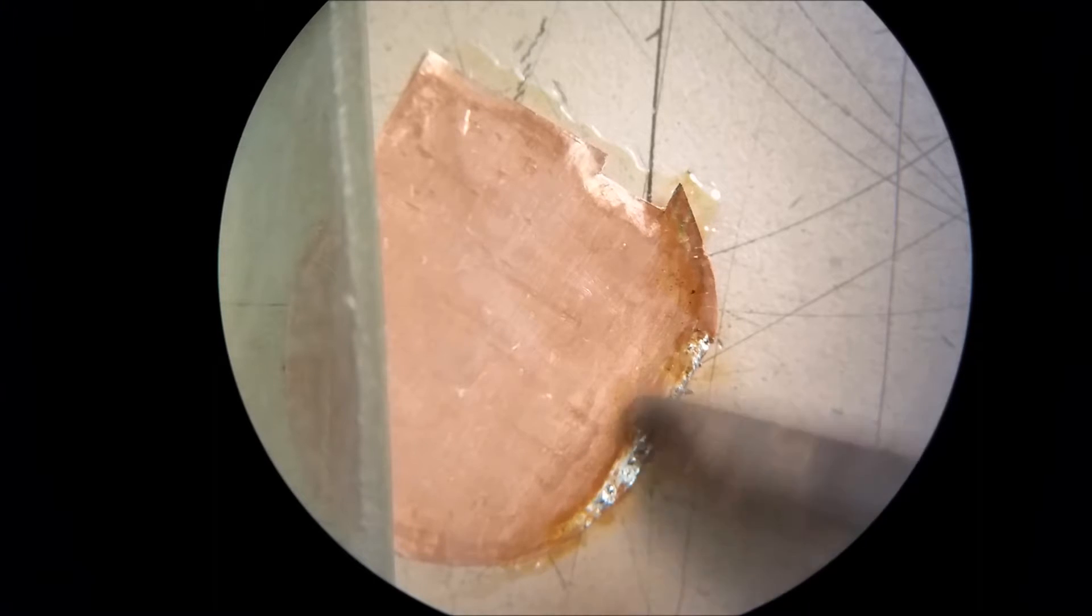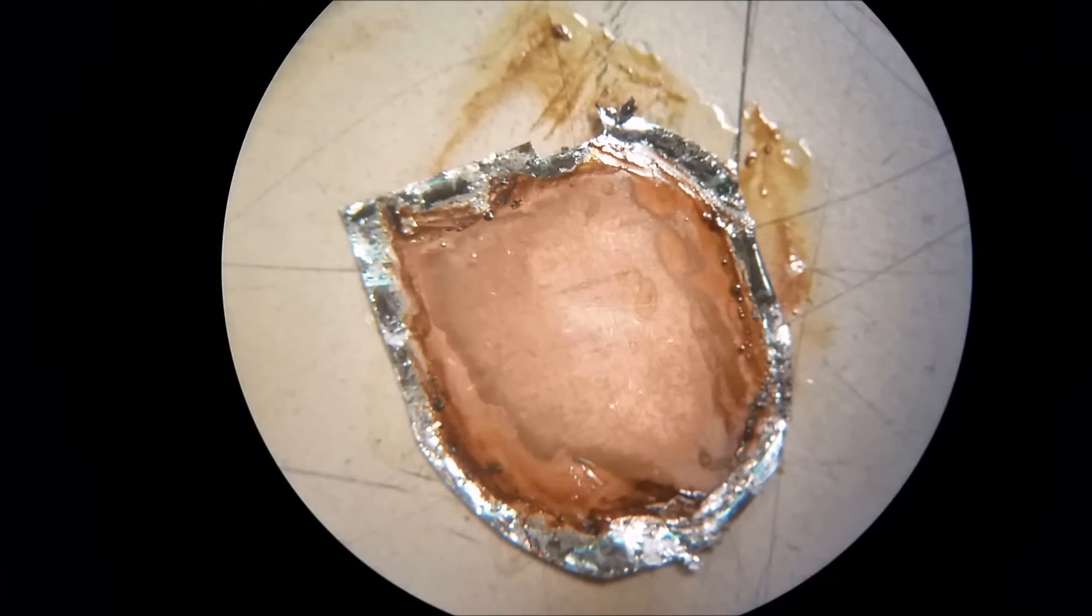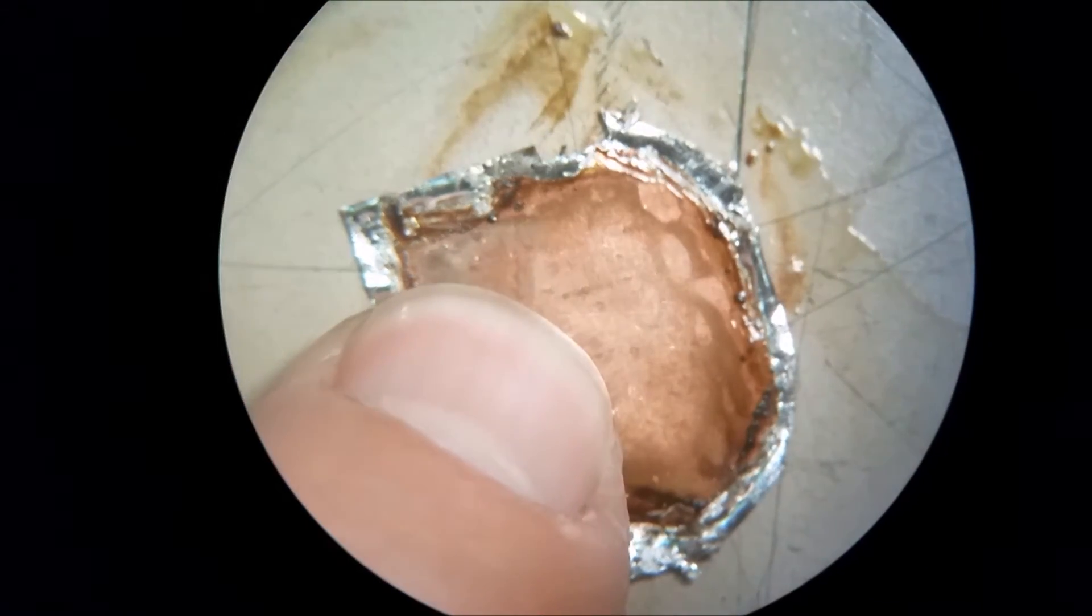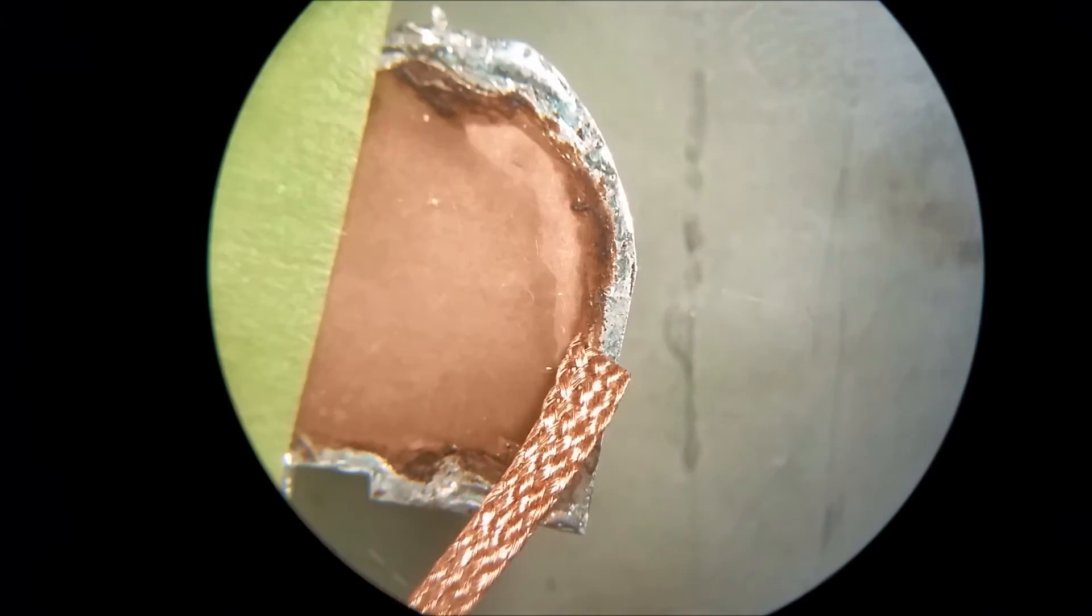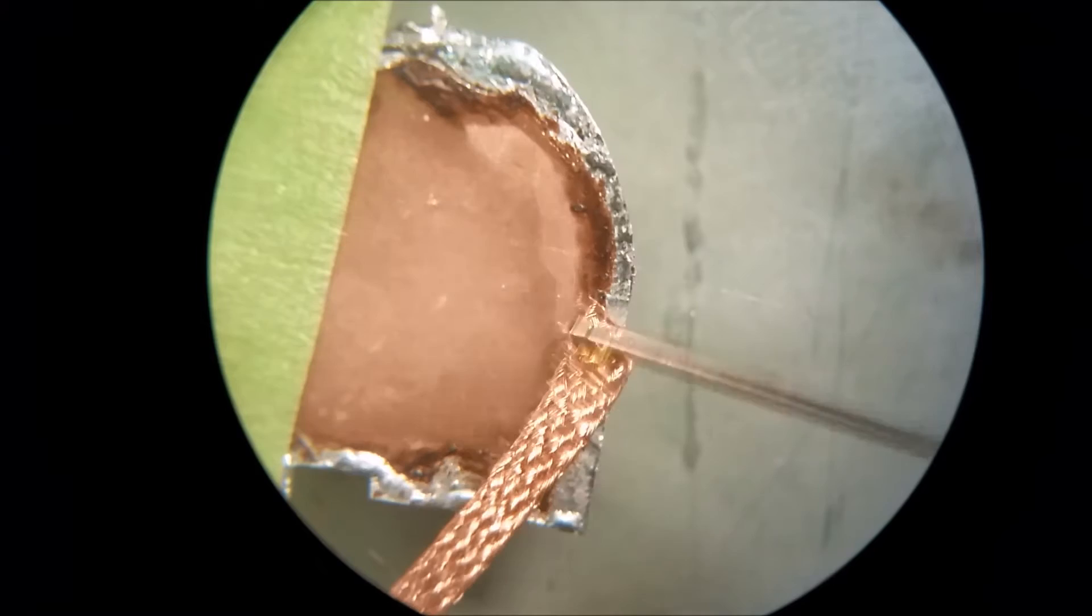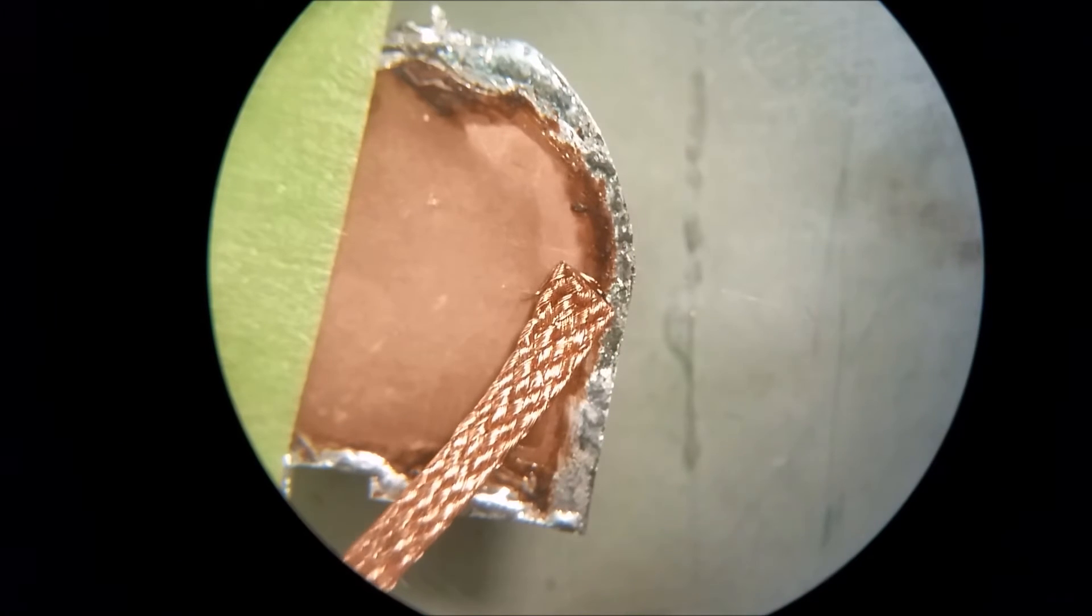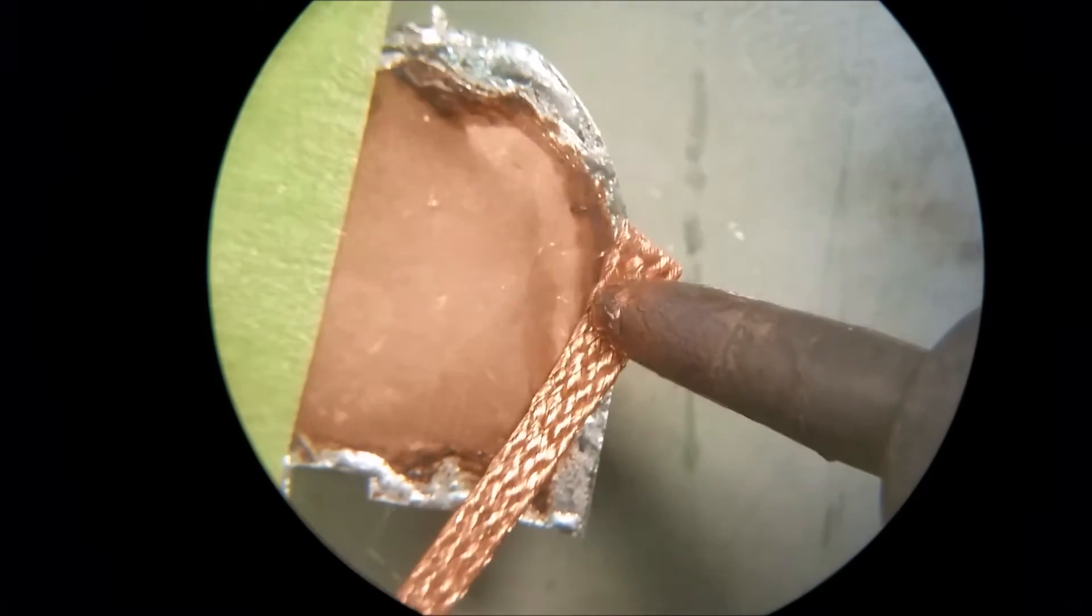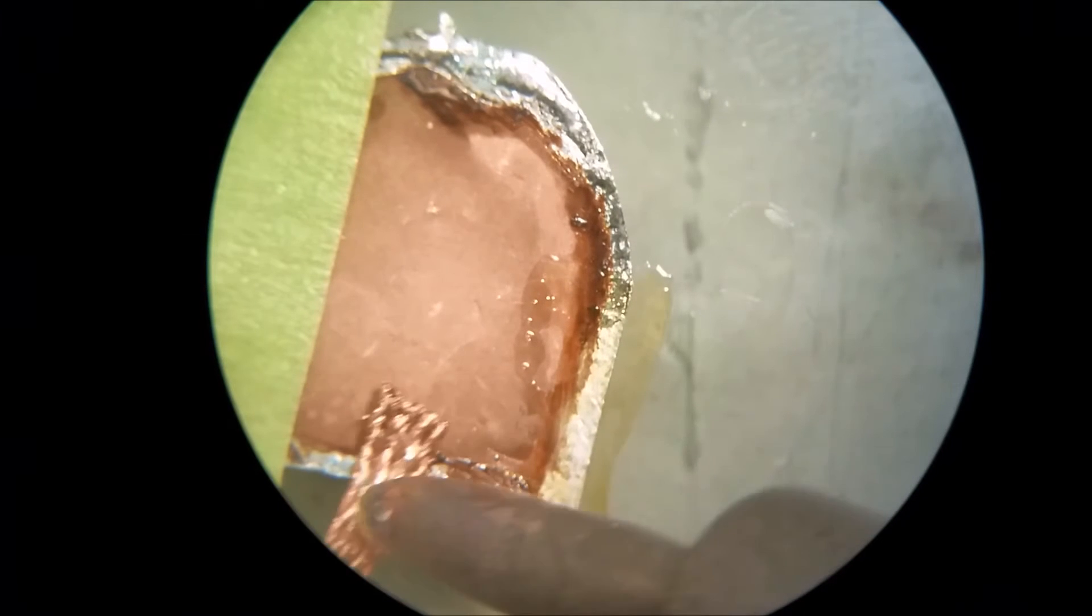Alright, let me get this all on here. After you get it all tinned up, go ahead and get some alcohol on there and clean it all up real good. After you get it cleaned up, tape one side down, put a little bit of flux on your braid, and take your braid and remove all the excess solder on it so that it's pretty much flush all the way across.